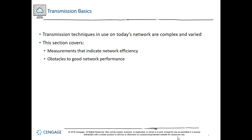Today we're typically using copper cabling such as category cabling — Cat5, Cat6, Cat7 — fiber optic cabling, and for most of us at home, wireless communications. Networks are always evolving to meet the demand for greater speed, versatility, and reliability, and network media technologies are changing rapidly.